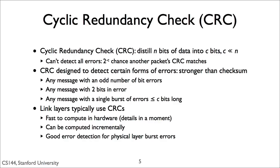For example, a 16-bit CRC can't guarantee it will detect two bursts of 3-bit errors spaced far apart in a packet, but it's likely it will detect it. Link layers typically use CRCs. They're pretty robust, and as many link layers are vulnerable to bursts of errors, the burst detection capabilities of CRCs is useful. It's not hard to make hardware compute them quickly, and you can compute them incrementally as you read or write the packet.